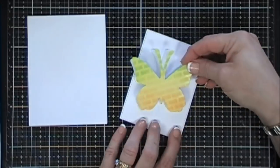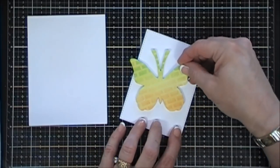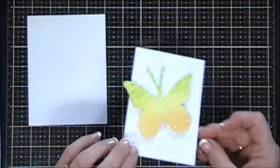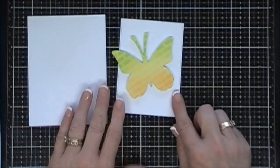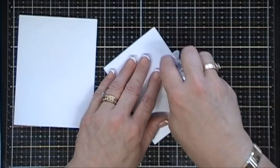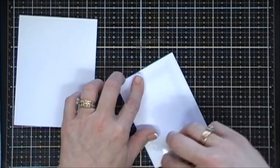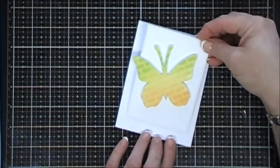Now all I have to do is remove my release paper and then add my colored in butterfly, and it fits right on top beautifully. I love how clean those edges look versus just using foam squares. I think that just looks so fun.